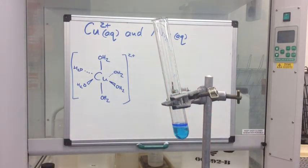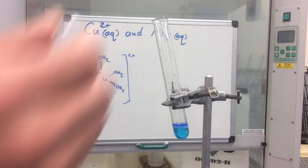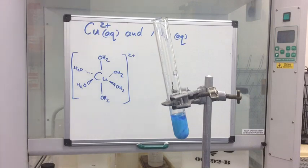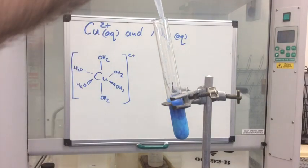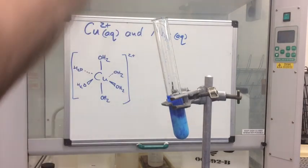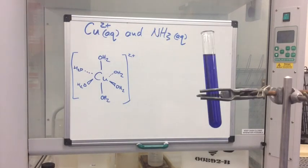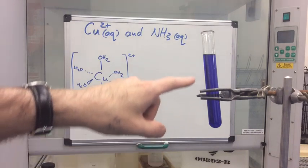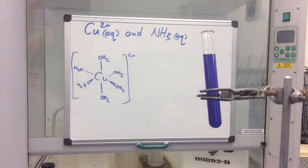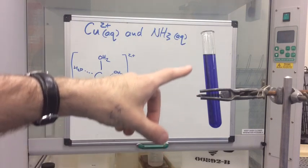Now I'm going to flood this with more aqueous ammonia. You can see the precipitate very clearly, and as I keep adding it's getting darker blue. I've added more ammonia and given it a good shake, and you can see that the blue precipitate has completely dissolved and we've got this nice deep blue coloured solution formed in the test tube.